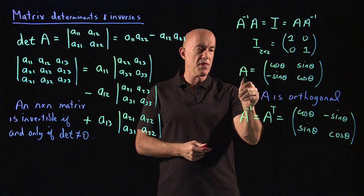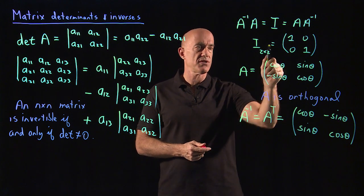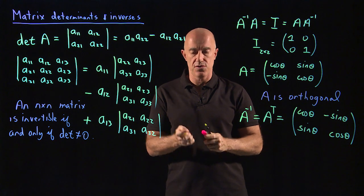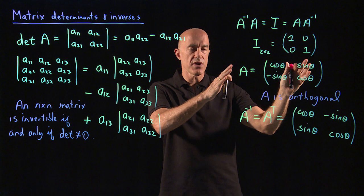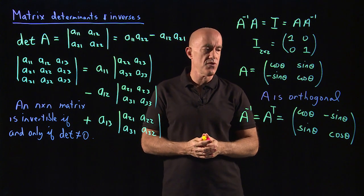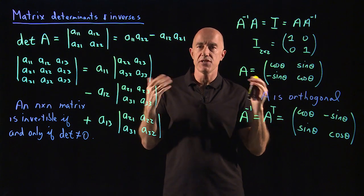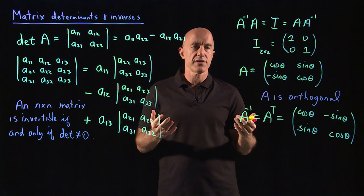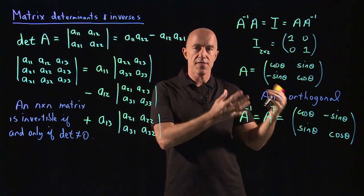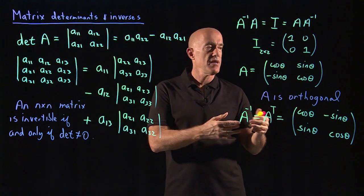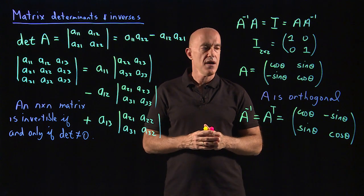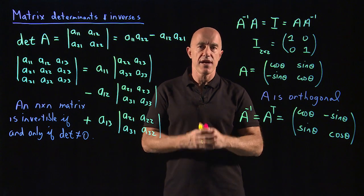And if you try to multiply A times A inverse, you'll get this 2 by 2 identity matrix. We don't need a general theory for this course. If you're interested in a general theory of determinants, you're interested to learn more about orthogonal matrices and inverses of matrices, then please take my course, Matrix Algebra for Engineers.